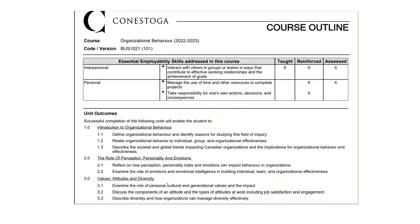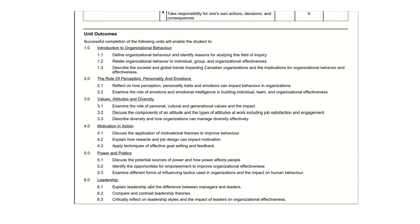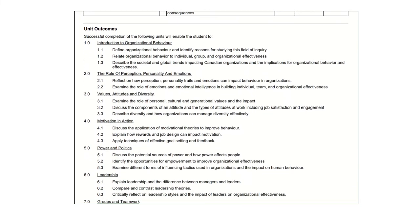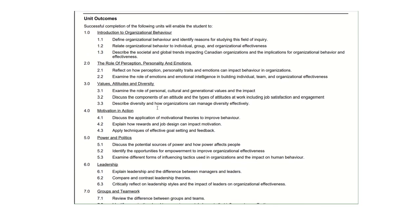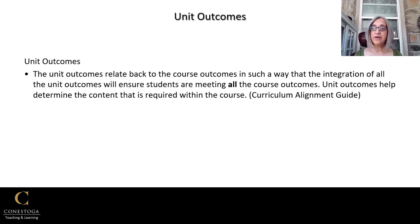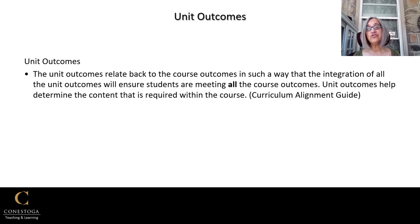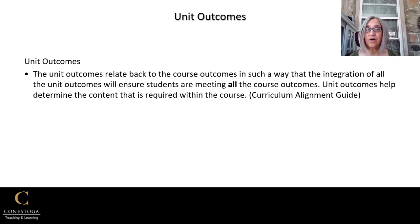The next element in the course outline is unit outcomes. These are pretty important, so let's pause for a definition. Course learning outcomes were terminal statements. Unit outcomes relate back to those course outcomes in such a way that the integration of all the unit outcomes will ensure students are meeting all the course outcomes. So unit outcomes help determine the content required within the course in order to achieve those final course learning outcomes.